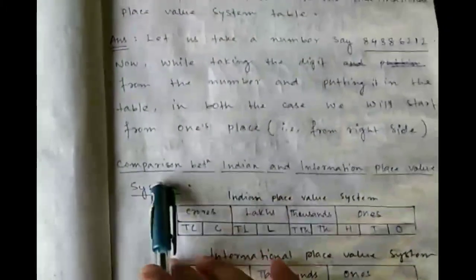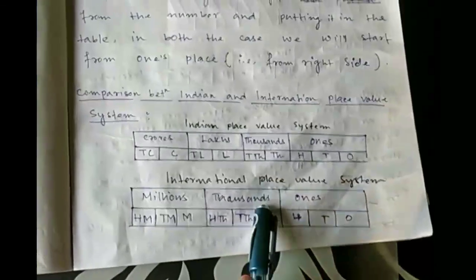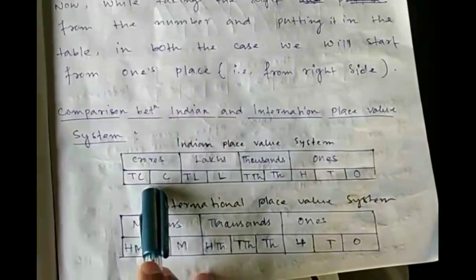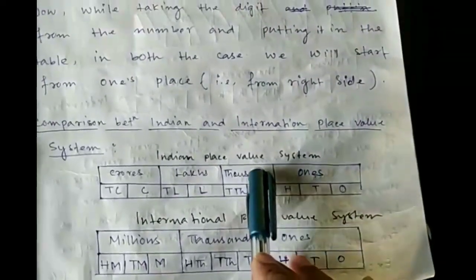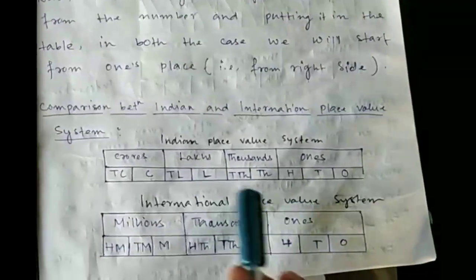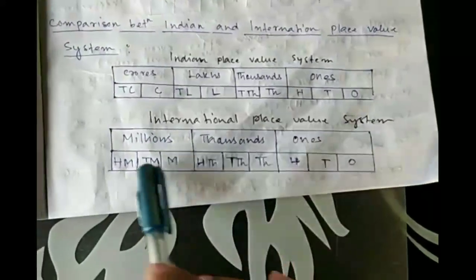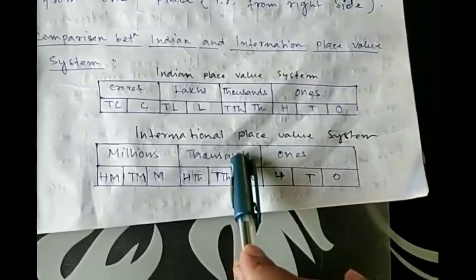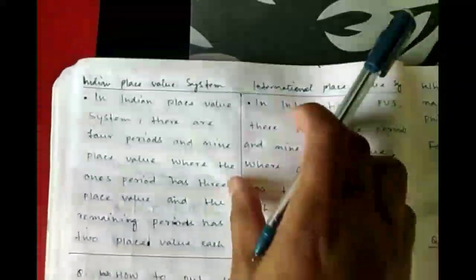Now a comparison between the Indian and International Place Value systems. In the Indian Place Value System table there are four periods and nine place values, and the remaining periods have two place values each. Whereas in the International Place Value System there are three periods and nine place values, and each and every period has three place values each.